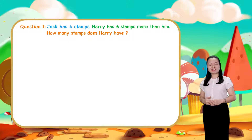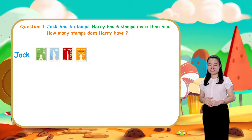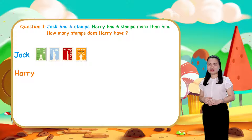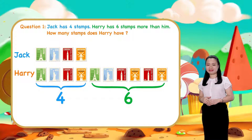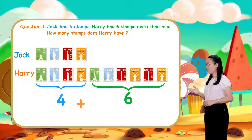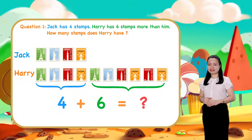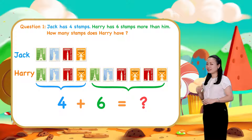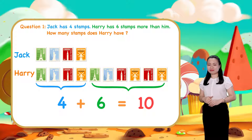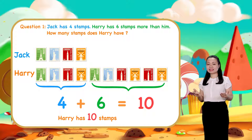Let's find the answer together. Jack has 4 stamps. Harry has 6 stamps more than him. So Harry will have 4 stamps and 6 more. We add 4 and 6 to find the number of stamps Harry has. So, 4 plus 6 equals 10. We conclude, Harry has 10 stamps.